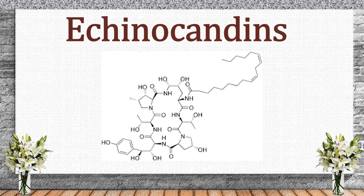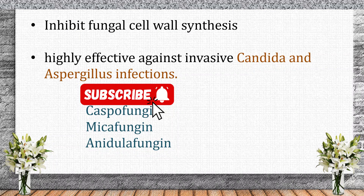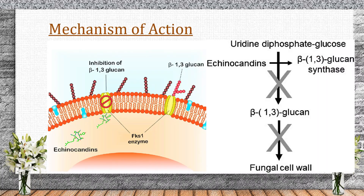Echinocandins are a newer class of antifungals that target the fungal cell wall instead of the cell membrane. They inhibit beta-1,3-glucan synthase, an enzyme essential for synthesizing beta-1,3-glucan, a key component of the fungal cell wall, leading to cell wall disruption, osmotic instability, and fungal cell death. Echinocandins are fungicidal against candida species and fungistatic against aspergillus species. Unlike azoles and polyenes, they do not target ergosterol, making them less toxic to human cells. Examples include caspofungin, micafungin, and anidulafungin.